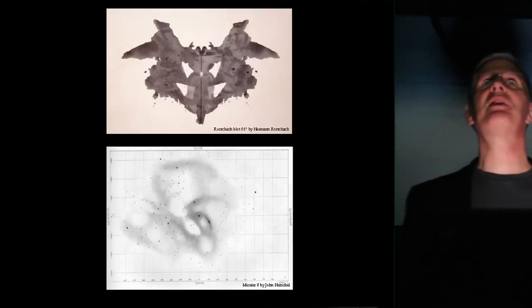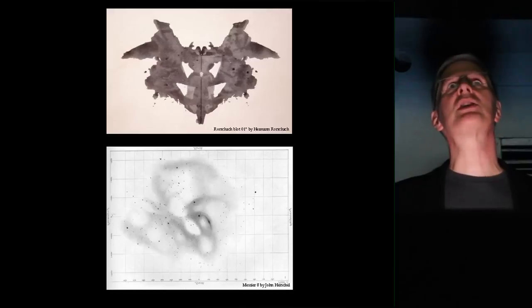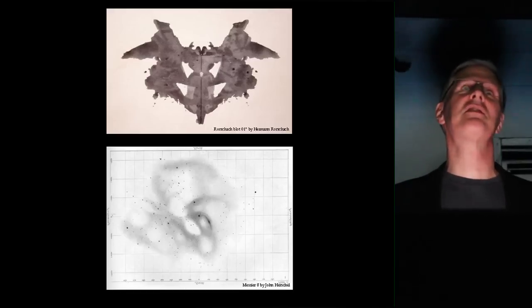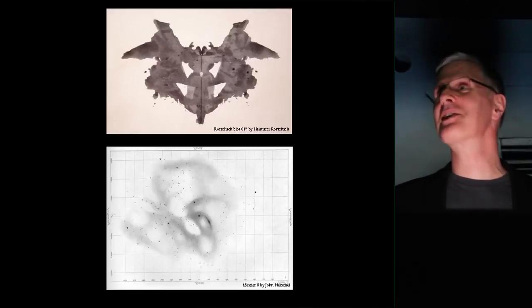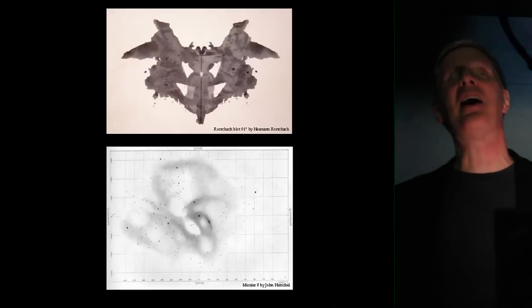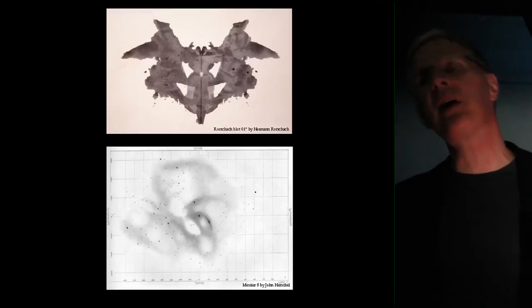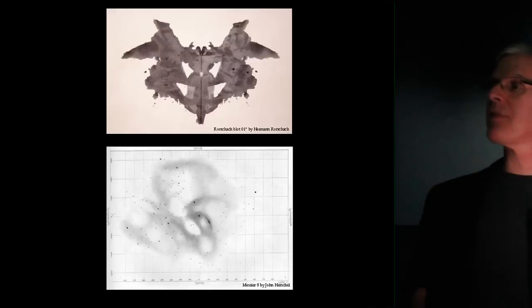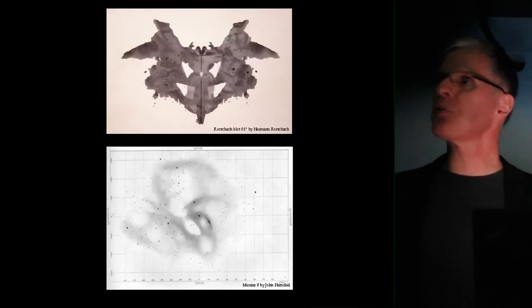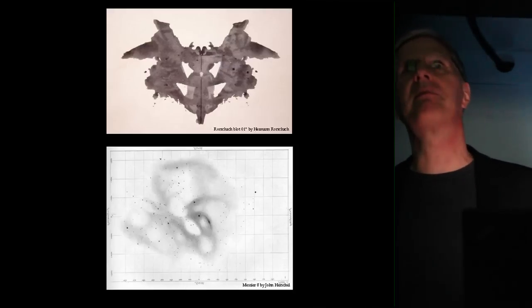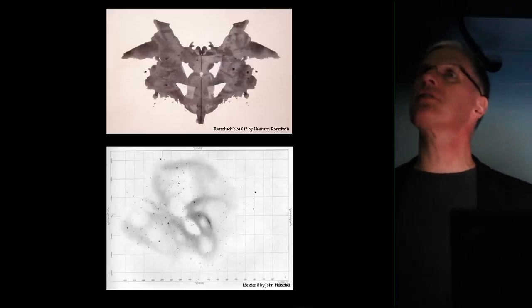At the top is a standard Rorschach inkblot, and below it, just because of the similarity, is John Herschel's drawing of the Lagoon Nebula. In one sense you could say these faint, ill-defined, nebulous things in the sky can be kind of a Rorschach test — because we can project what we expect and want to see onto them. The analogy isn't that forced.